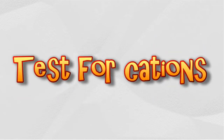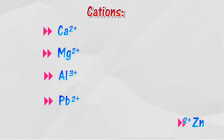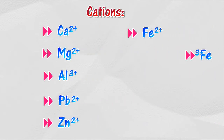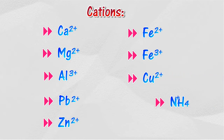Test for Cations. The cations that are usually tested are calcium, magnesium, aluminum, lead, zinc, ferrum 2, ferrum 3, copper 2, and ammonium ion.